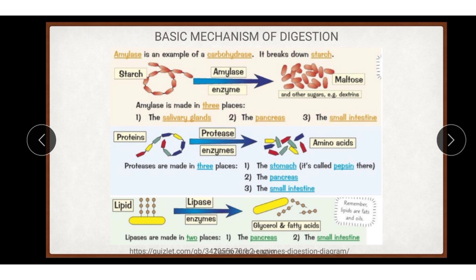First, carbohydrate digestive enzymes. Amylases split polysaccharides into disaccharides — that is, starch into maltose, sucrose, isomaltose, and dextrins, as you can see in the slide. Disaccharides are split by maltase, sucrase, lactase, and isomaltase into monosaccharides, which are glucose, fructose, and galactose.